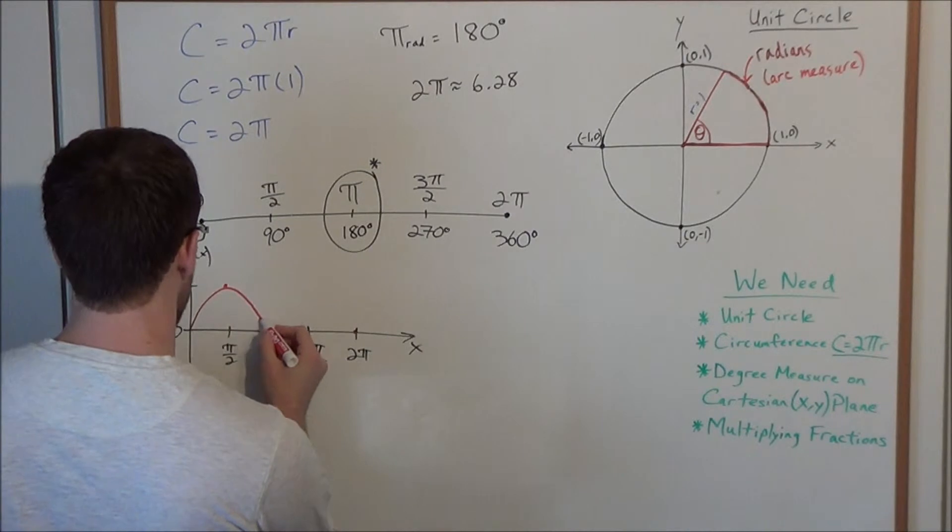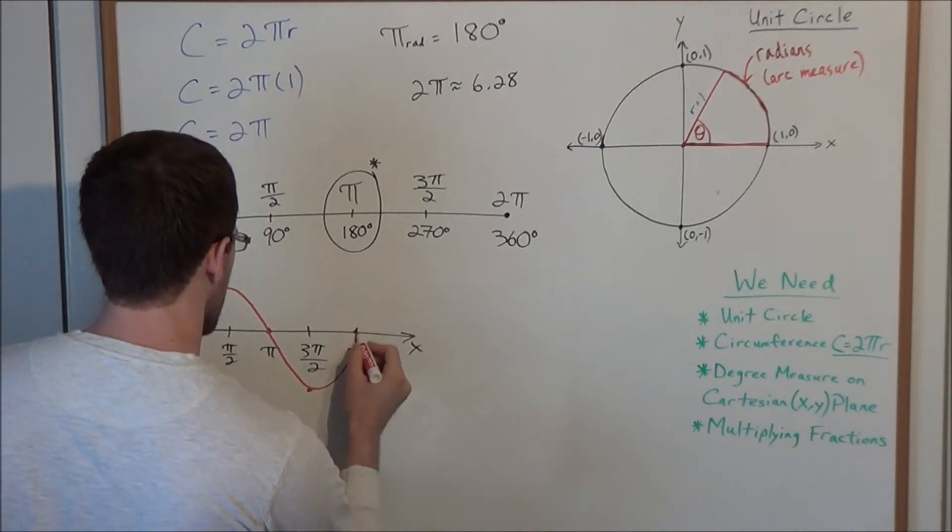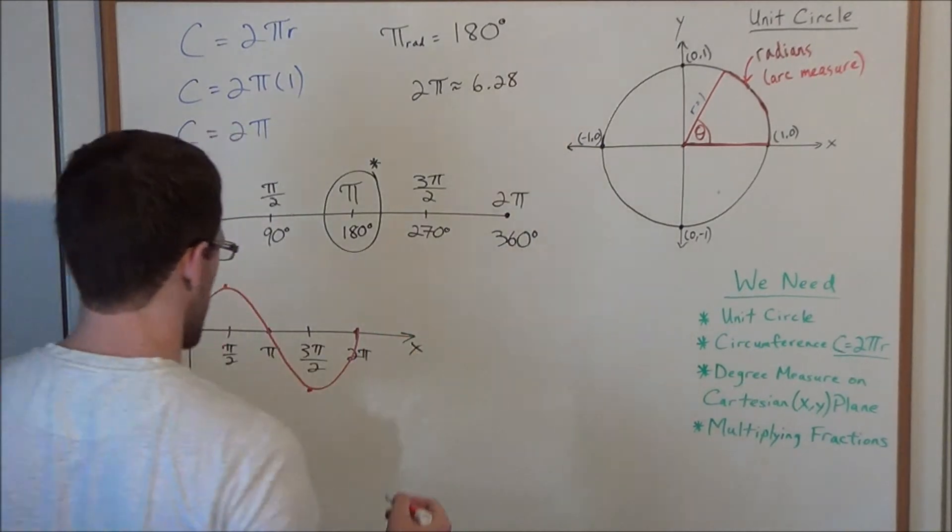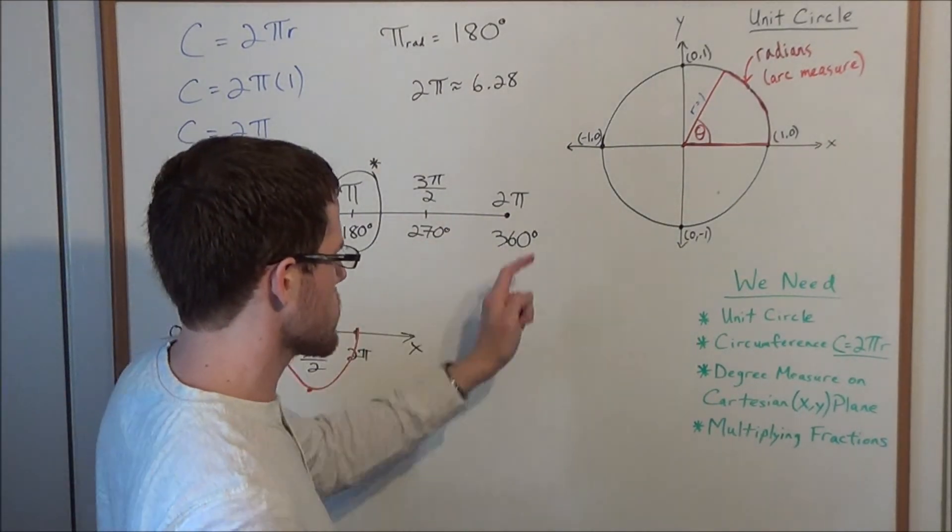So we start the origin, we loop up, we're looping down, and it takes on this nice sinusoidal shape, this wave motion, and it continues this way.